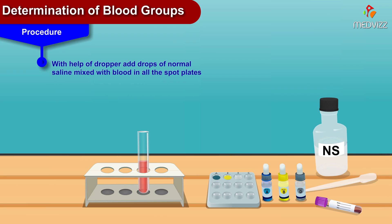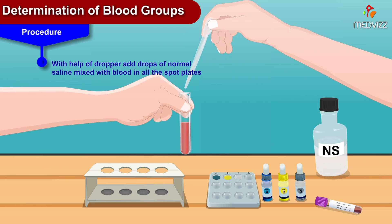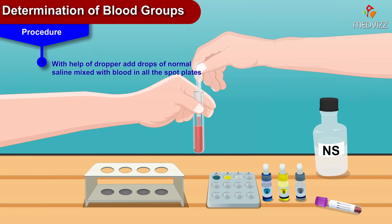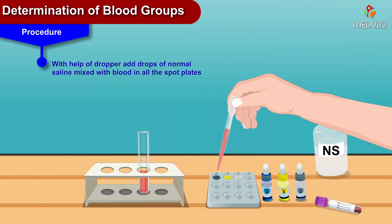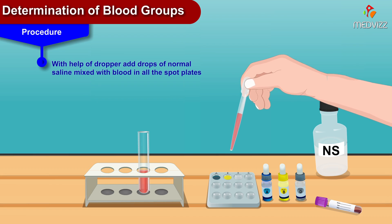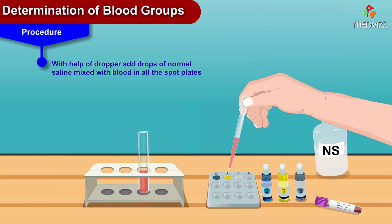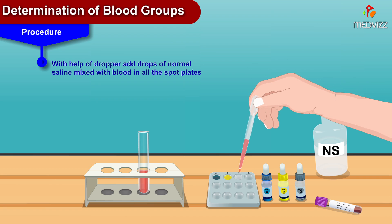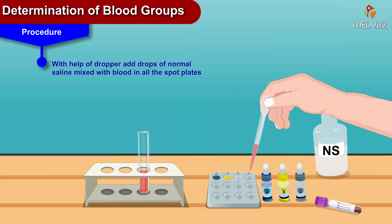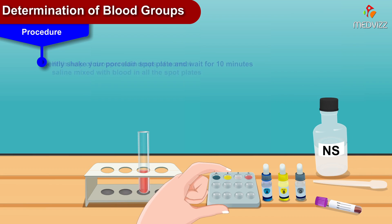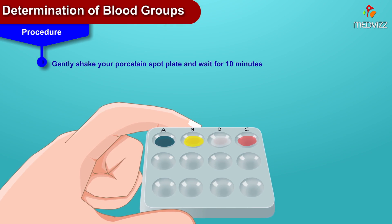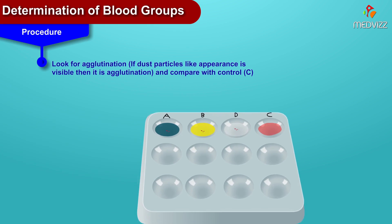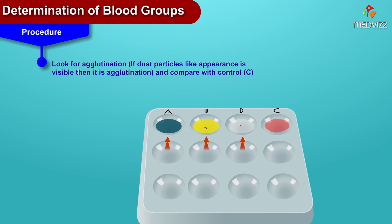With the help of a dropper, add drops of the normal saline mixed with blood into all the spot plates. Now gently shake the porcelain spot plate and wait for 10 minutes. Look for agglutination and compare with the control.